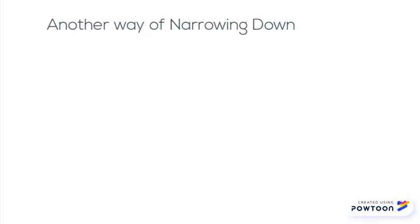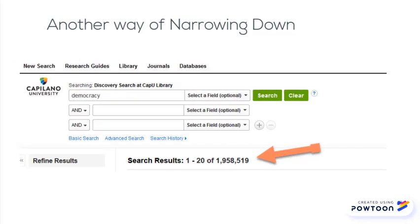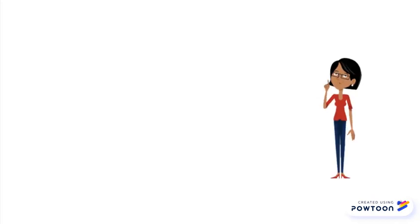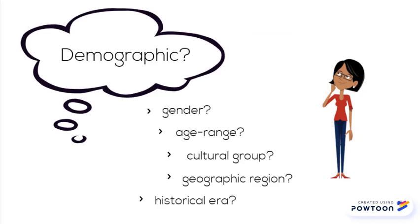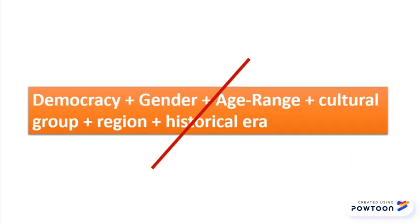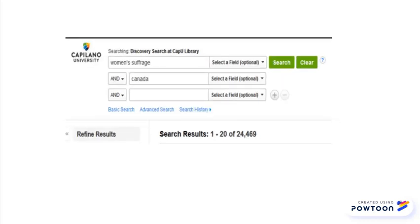Note, you don't have to use the subject menu to relate ideas together. You could also narrow down your focus by combining your ideas together up here on the advanced search screen. You'd still want to start with democracy in the first box and then think about what aspects you'd like to zero in on. Ask yourself: are you interested in a specific demographic such as gender, age range, or cultural group, or perhaps a specific geographic region or historic era? The key, of course, is not to narrow down your topic by all these options.